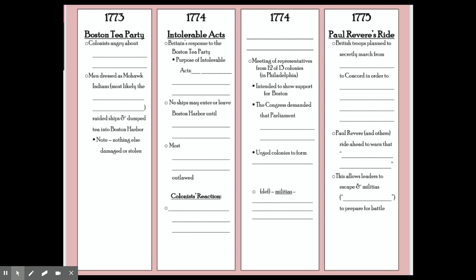Let's fill in the notes. Colonists were angry about the tax on tea; the Sons of Liberty raided the ships, and nothing else was damaged or stolen. For the British reaction, you can write that Parliament passed laws called the Intolerable Acts.